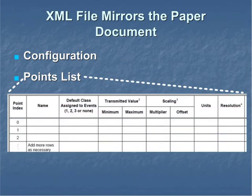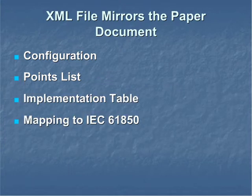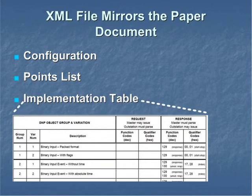The next section, points list, describes the scaling in units and provides for a text description of the point. The implementation table describes which data types, function codes, and qualifier codes are supported.